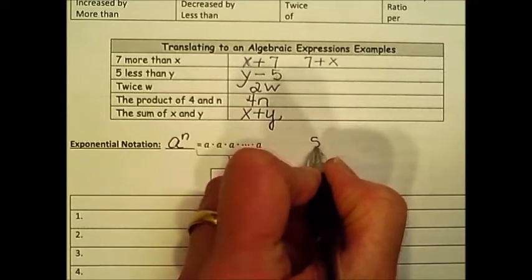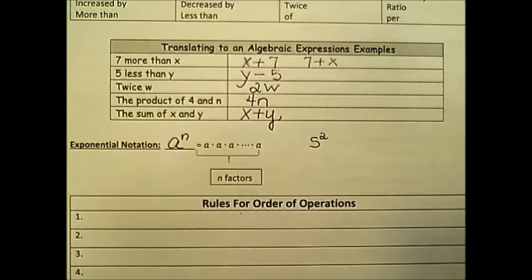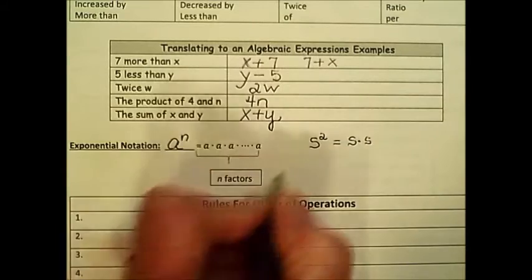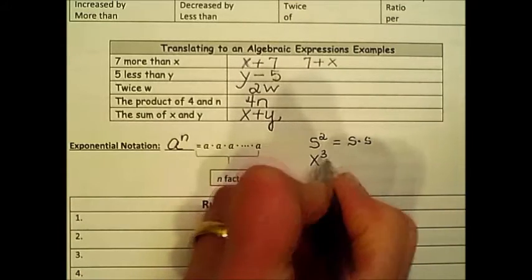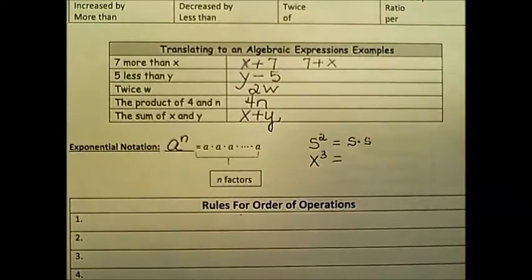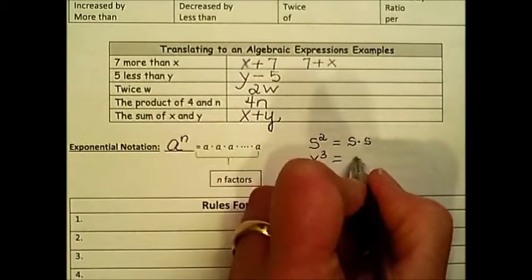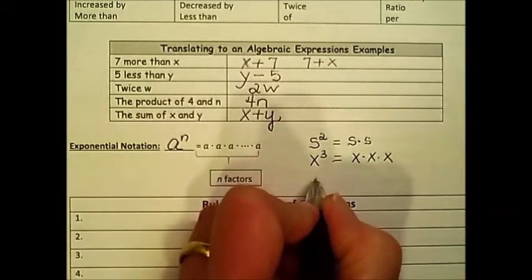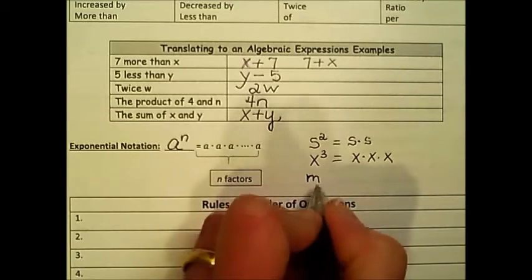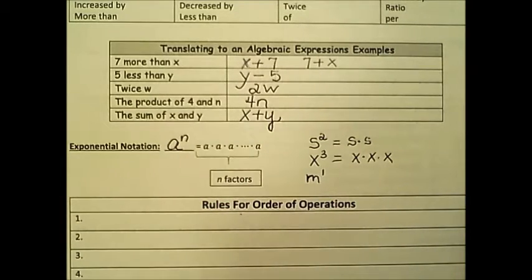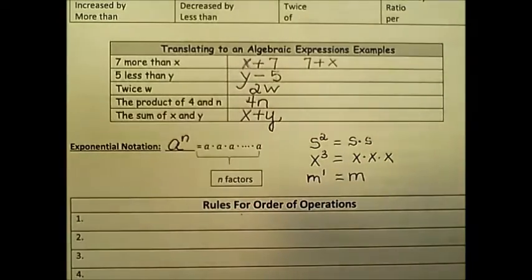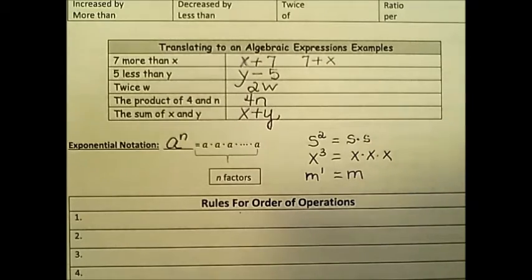Specifically, if we have s to the second power, sometimes we read this as s squared because of the area application. This in expanded notation means s times s. If we have x to the third power, sometimes we call this x cubed. This in expanded form is x times x times x. Any number is understood to be b to the first power. So m to the first power is just simply m.